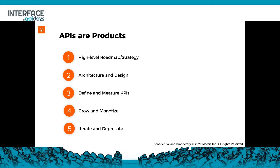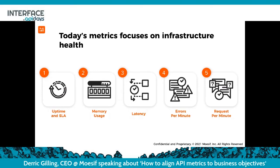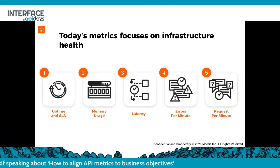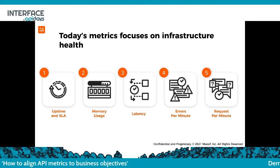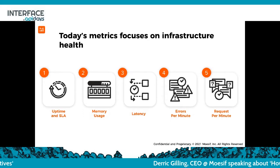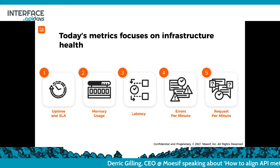With that said, most of the metrics up to this point have focused on the infrastructure side — things like SLAs, uptime, latency, errors per minute. There's nothing here that looks like business value or dollars going through an API. So how do you actually align these to your business goals?